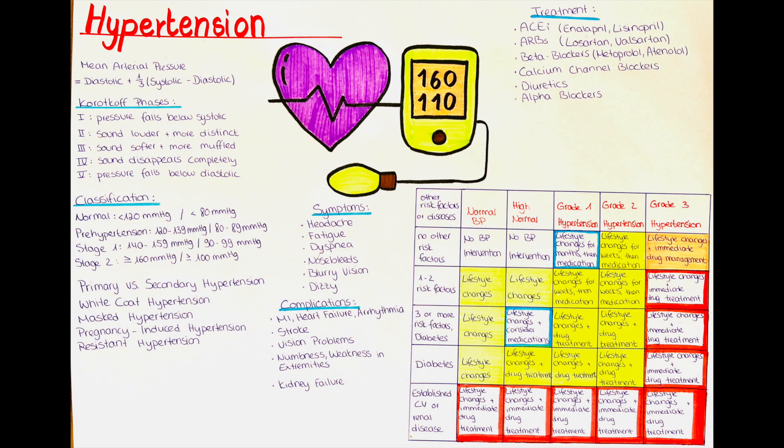Angiotensin-2 receptor blockers, or ARBs, such as losartan and valsartan, also lead to vasodilation by blocking angiotensin-2 action. They are used for similar conditions as ACE inhibitors, and can be an alternative for those who can't tolerate ACE inhibitors or experience side effects.